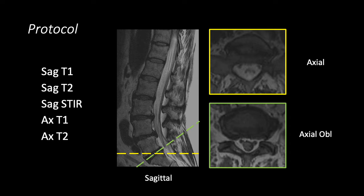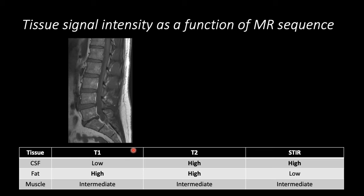There are different sequences, and all the sequences show the same anatomy. However, the signal intensity — the relative brightness and darkness of tissues with respect to one another — will differ depending on the sequence used. For example, on T1-weighted sequences, fat is bright, and you can see the bright signal of the subcutaneous fat as well as the epidural fat inside the spinal canal outside of the thecal sac. CSF signal is low, and you can see that dark signal inside the thecal sac here.